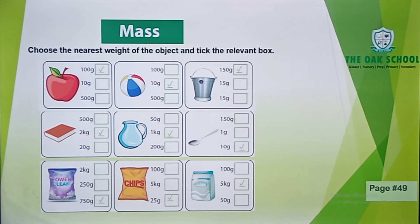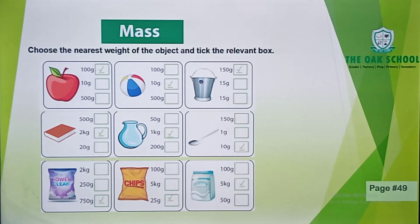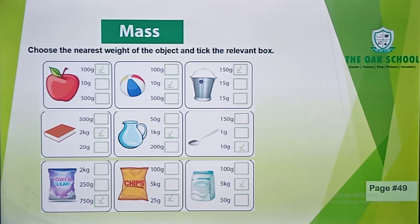After that, you have a washing powder. In the washing powder, you have 3 weights: 2 kg, 250 grams, or 750 grams. If you look at the numbers, the weight is different. So I have ticked 750 grams and you have to tick it in the box.